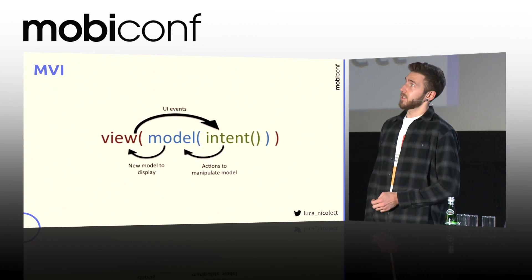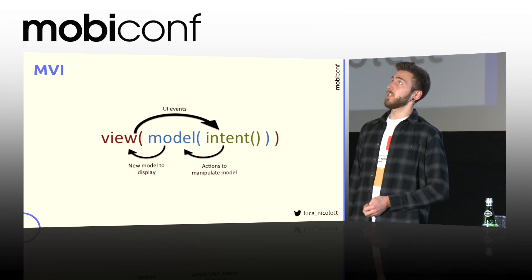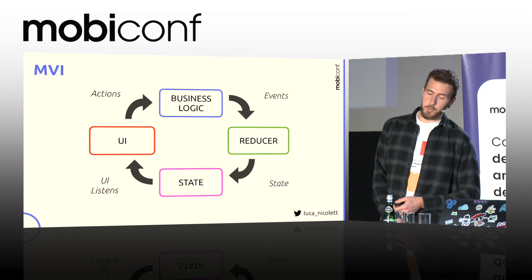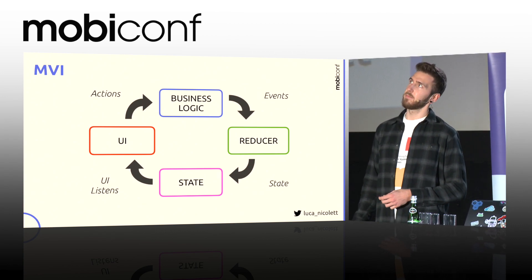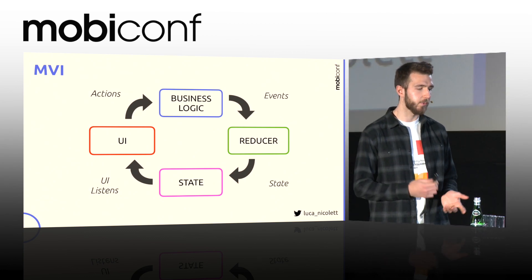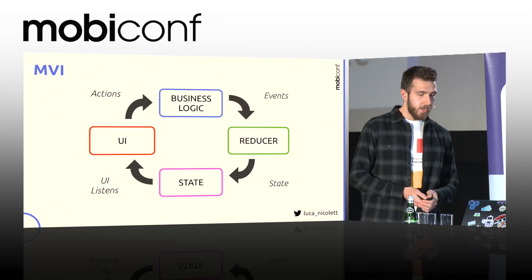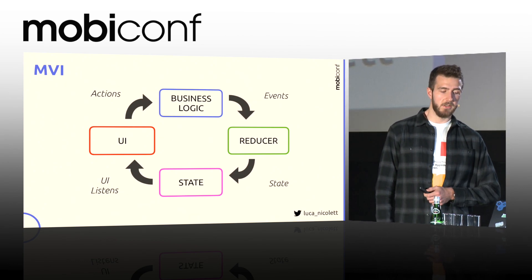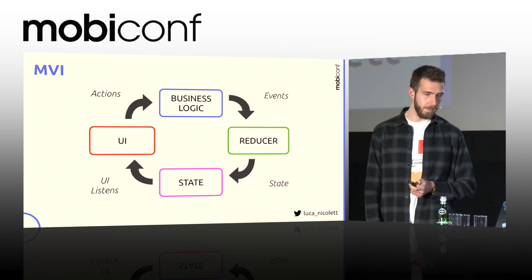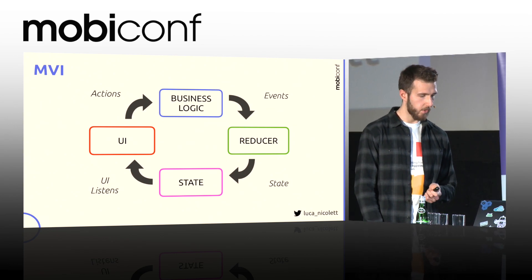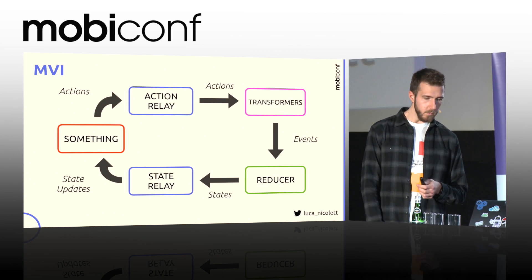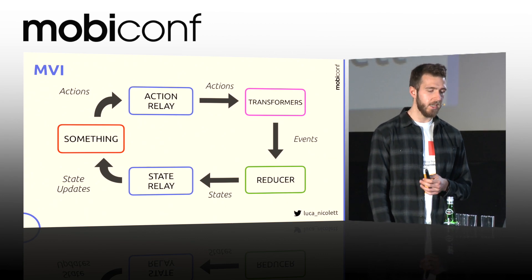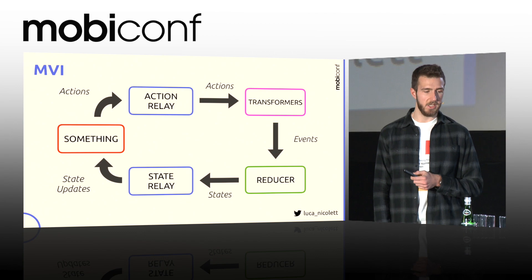As this pattern treats everything as a function, it can also be represented in this way. Those functions are also meant to be pure. So we assume that the beginning point is the user interacting with the UI, but that might not be the case. We could also want to perform some action based on system events, like lifecycle events in Android. That's why in our implementation of MVI, we ended up accepting something instead of just UI interaction — even lifecycle events.